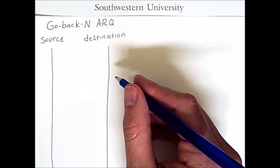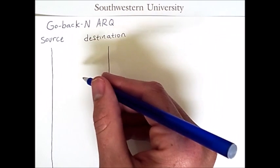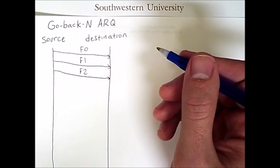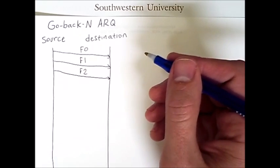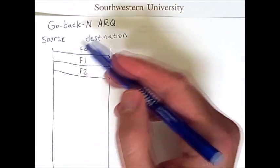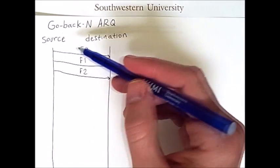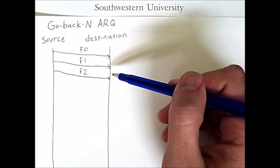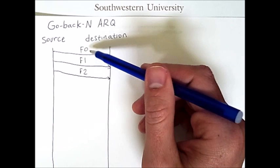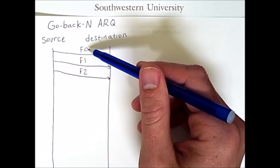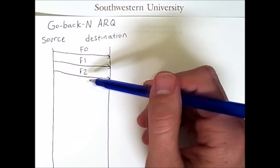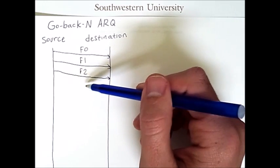So if things go well, we'll get a sequence of frames being sent that looks something like this. Now remember that because we are using sequence numbers 0 through 3, the most that the source can send before having to wait for some sort of acknowledgement from the destination is three frames. So if it sends frames with sequence numbers 0, 1 and 2, it will then have to wait for some sort of acknowledgement before sending frame 3.